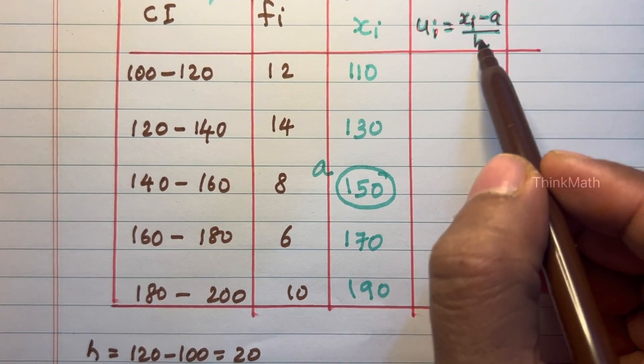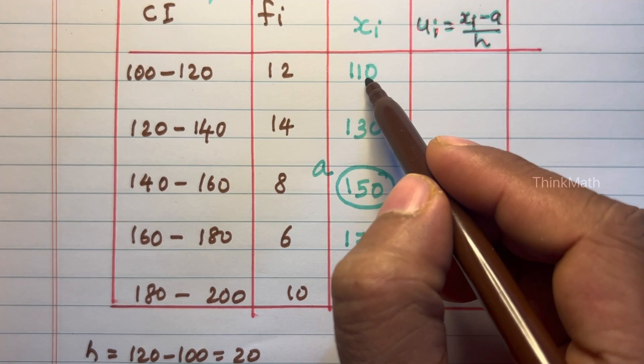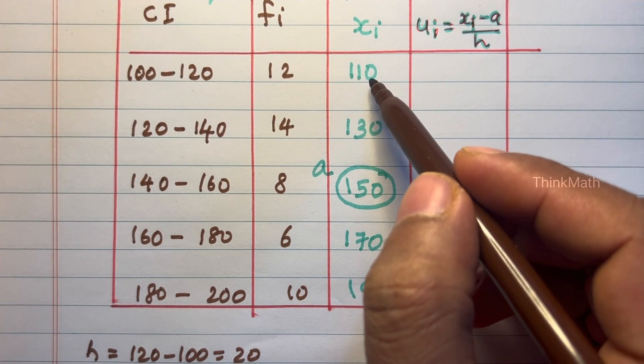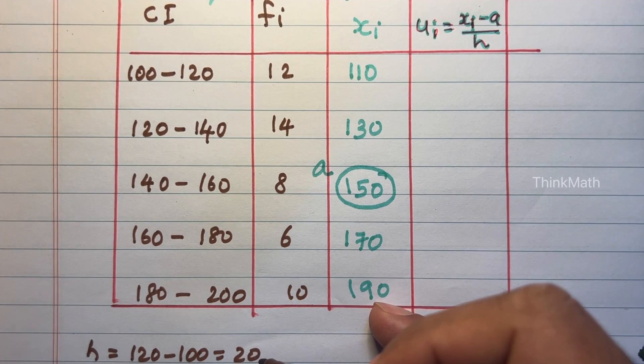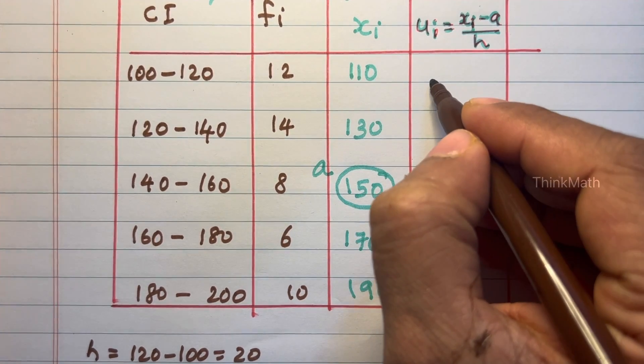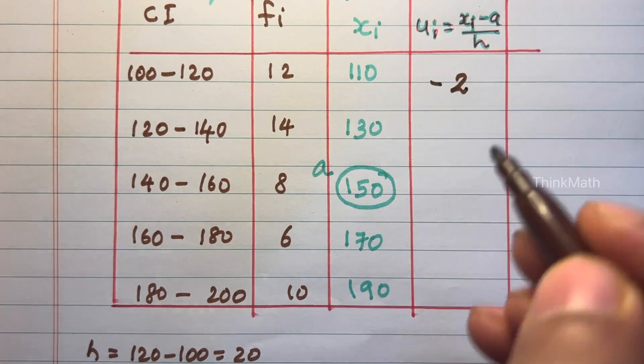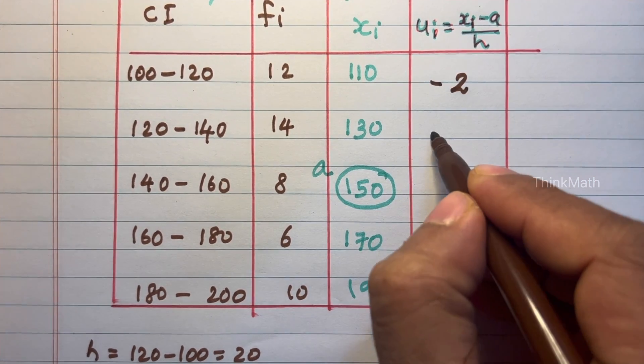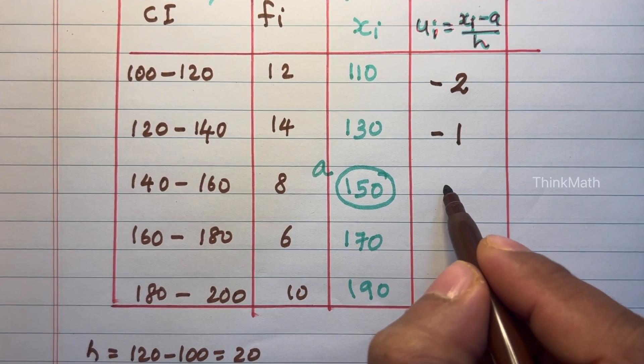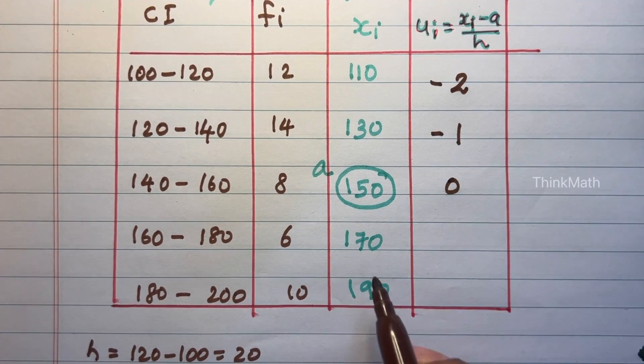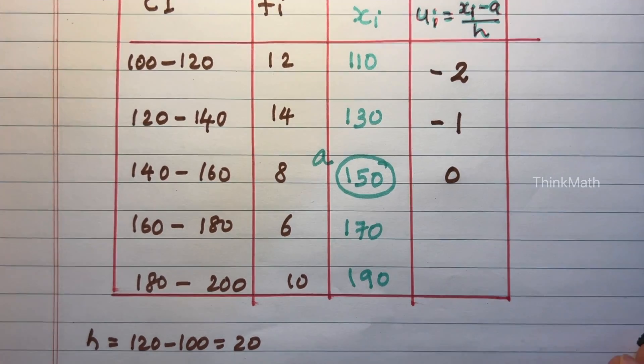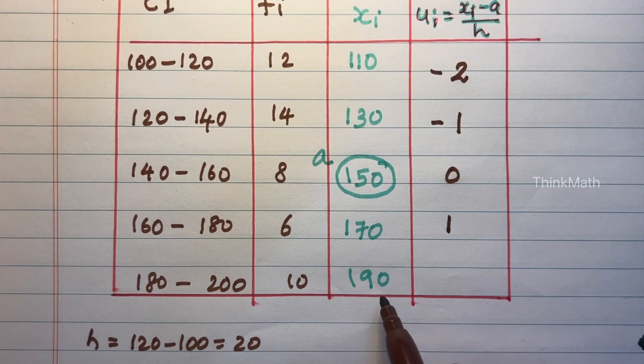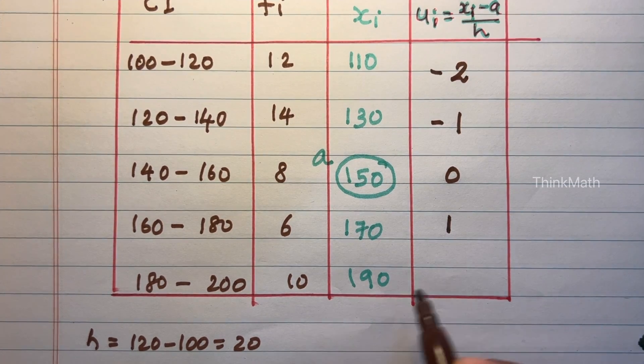So please find ui, xi minus A divided by H. So 110 minus 150, that is minus 40 divided by 20, that is equal to minus 2. 130 minus 150, minus 20 by 20, minus 1. 150 minus 150 by H is 0. 170 minus 150 is 20, 20 divided by 20 is 1. 190 minus 150, that is equal to 40, 40 by 20 is 2.